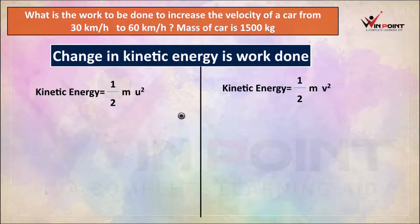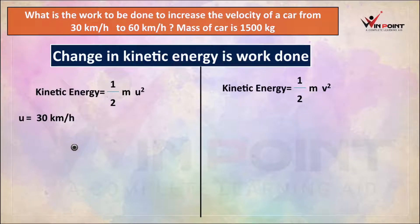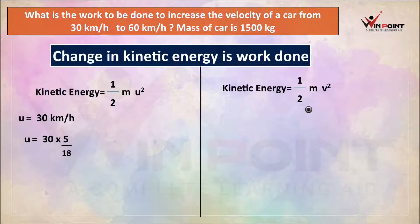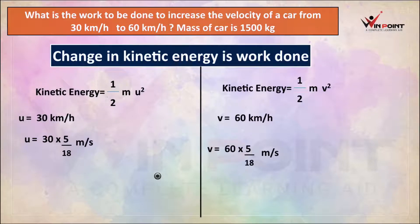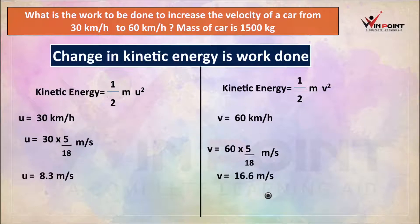The initial velocity U is 30 km per hour. We need to convert this to m/s. To convert km per hour to m per second, we multiply by 5 by 18. So U equals 30 into 5 by 18, which gives 8.3 m/s. The final velocity V is 60 km per hour. Converting: V equals 60 into 5 by 18, which gives 16.6 m/s. Now both values are in m per second.